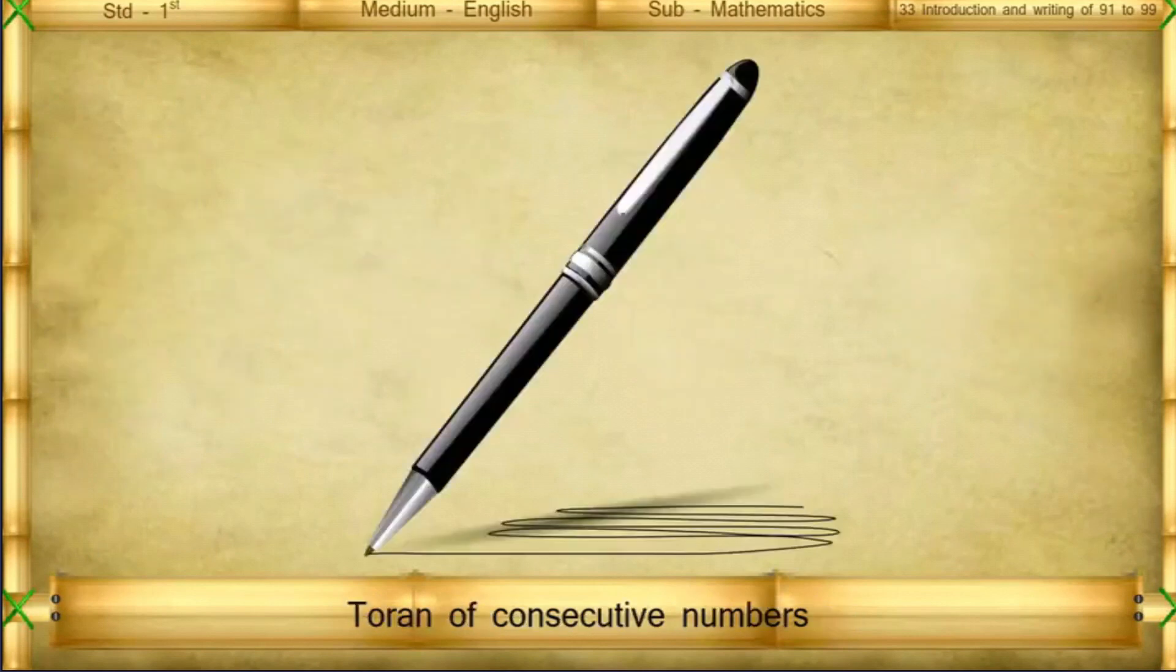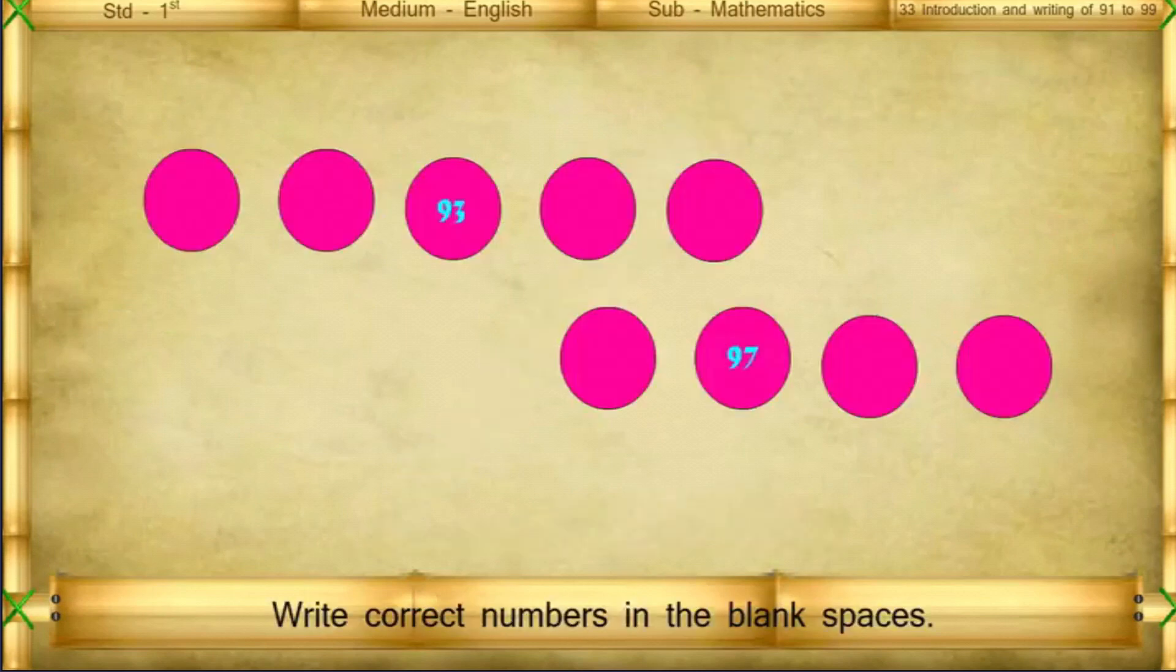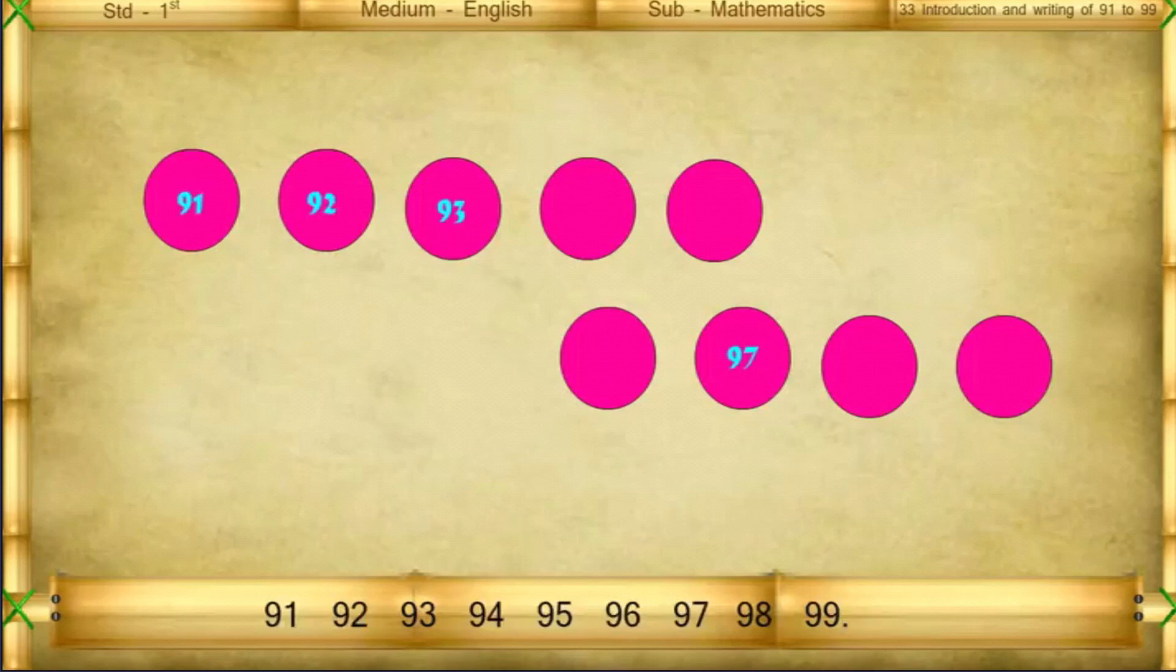Train of consecutive numbers. Write correct numbers in the blank spaces. 91, 92, 93, 94, 95, 96, 97, 98, 99.